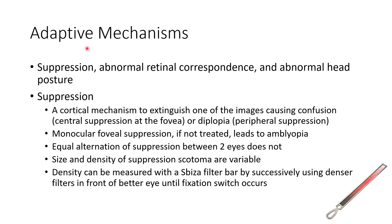Now let us discuss the adaptive mechanisms to avoid confusion and diplopia. The adaptive mechanisms include suppression, abnormal retinal correspondence, and abnormal head posture. Suppression is a cortical mechanism to extinguish one of the images causing confusion — that is, central suppression at the fovea — or diplopia, that is peripheral suppression.